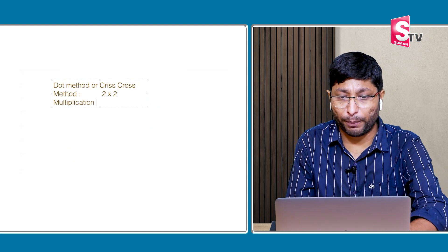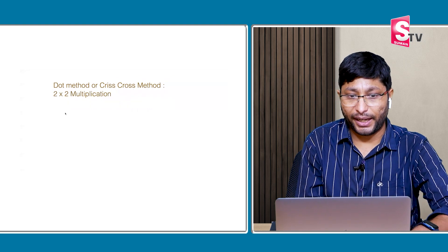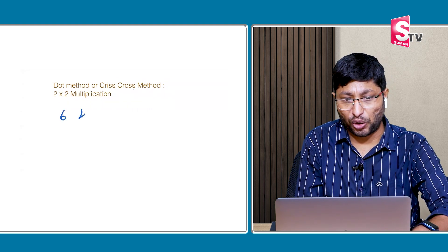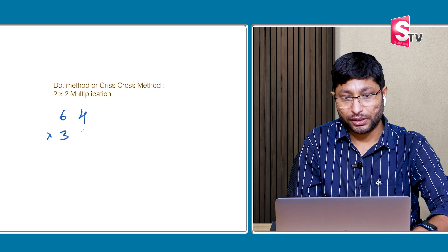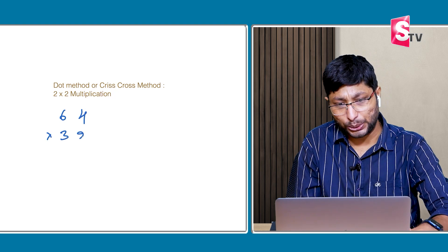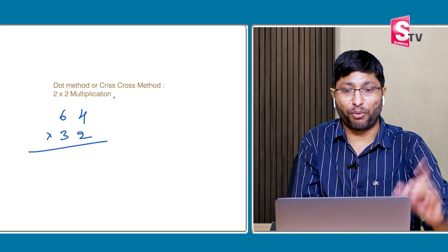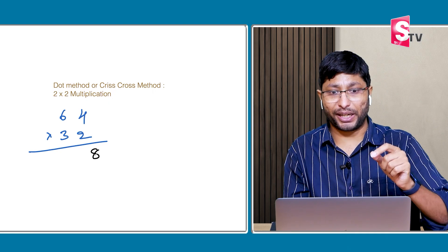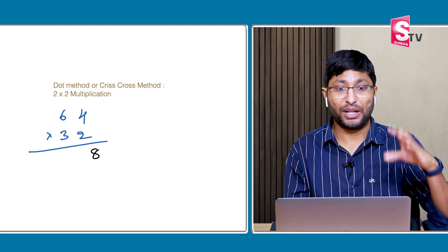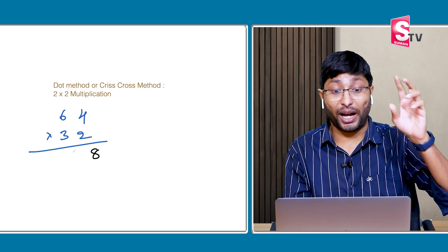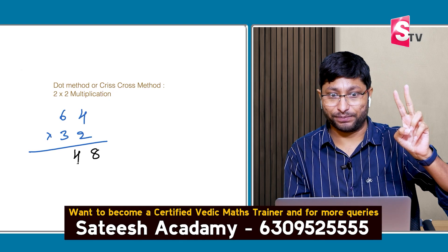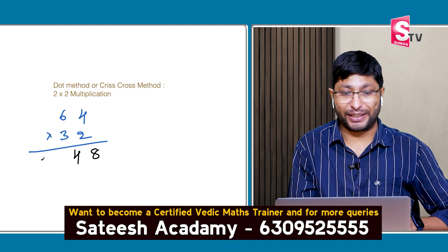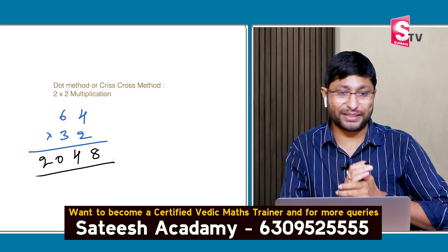One more problem on the same concept: 64 × 32. Step 1: 4 × 2 = 8, no carry. Step 2: 6 × 2 = 12, 4 × 3 = 12. 12 plus 12 = 24. Write down the 4; 2 carry. Step 3: 6 × 3 = 18, plus 2 carry = 20. Answer: 2048.